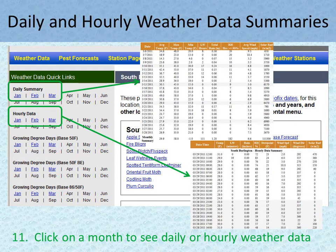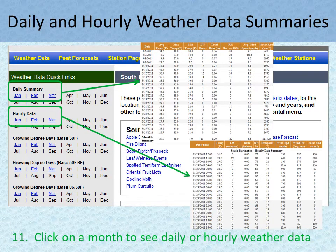In addition to these disease and insect pest forecasts, NEWA is a resource for daily and hourly weather data summaries that you can navigate to from the specific station page you choose. The summaries include data such as minimum, maximum, and average temperatures, relative humidity, wind speed, solar radiation, total rain, and leaf wetness for all sites except for the airport weather stations.